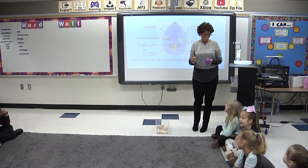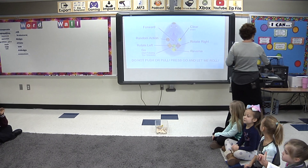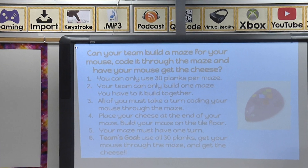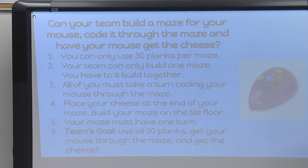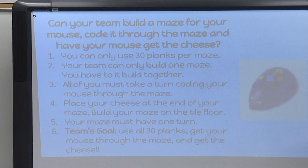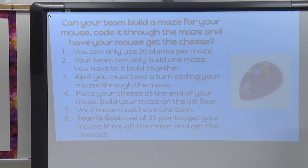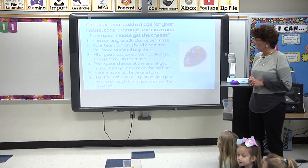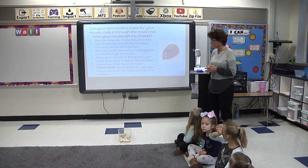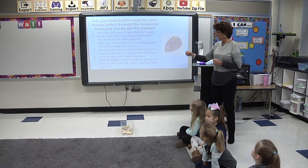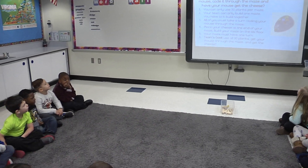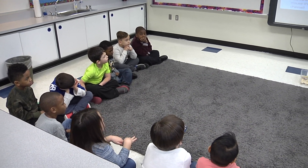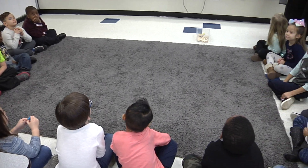So we're ready for our challenge today? Thumbs up if you're ready. Today's challenge is: can your team build a maze for your mouse, code it through the maze, and have your mouse get the cheese? You can only use the 30 planks that are in your box. Your team can only build one maze and you have to build it together. All of you must take a turn coding your mouse through the maze. You have to place your cheese at the end of the maze and build your maze on the tile floor. Your maze must have one turn in it. Your goal is to use all 30 planks, get your mouse through the maze, and get the cheese.